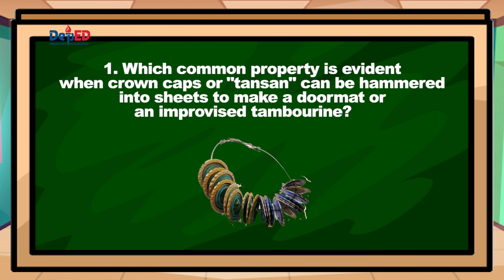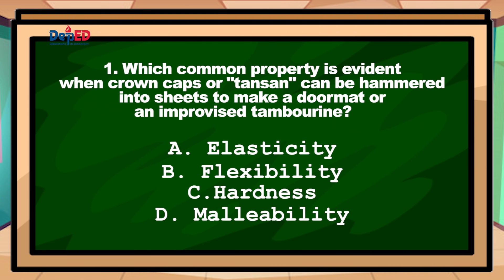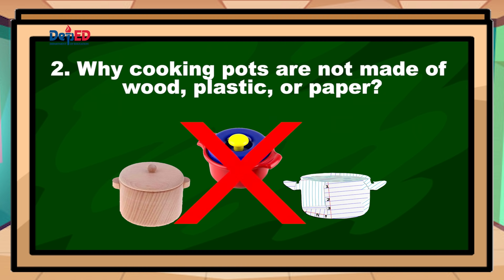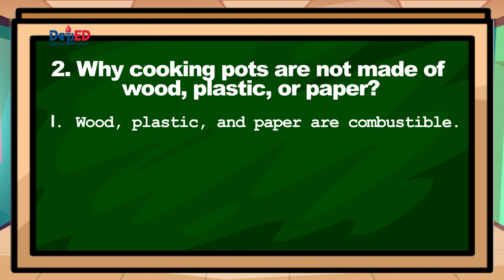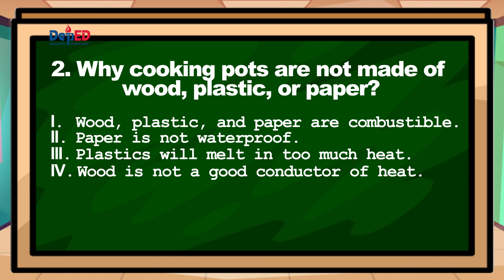Number one: Which common property is evident when crown caps or ten-cent cans can be hammered into sheets to make a doormat or an improvised tambourine? Number two: Why are cooking pots not made of wood, plastic, or paper? Choose the correct statement or statements: 1. Wood, plastic, and paper are combustible — they will burn when placed over fire. 2. Paper will absorb water and easily get wet. 3. Plastic will melt when exposed to too much heat. 4. Wood is not a good conductor of heat — it will not cook the food. Options are: A. One only. B. Two and three. C. Two, three, and four. D. One, two, three, and four.